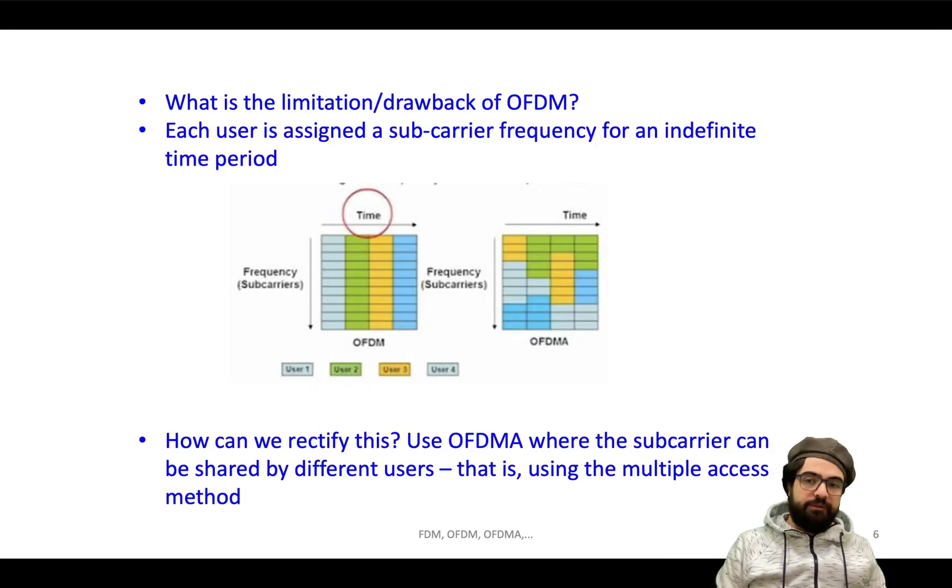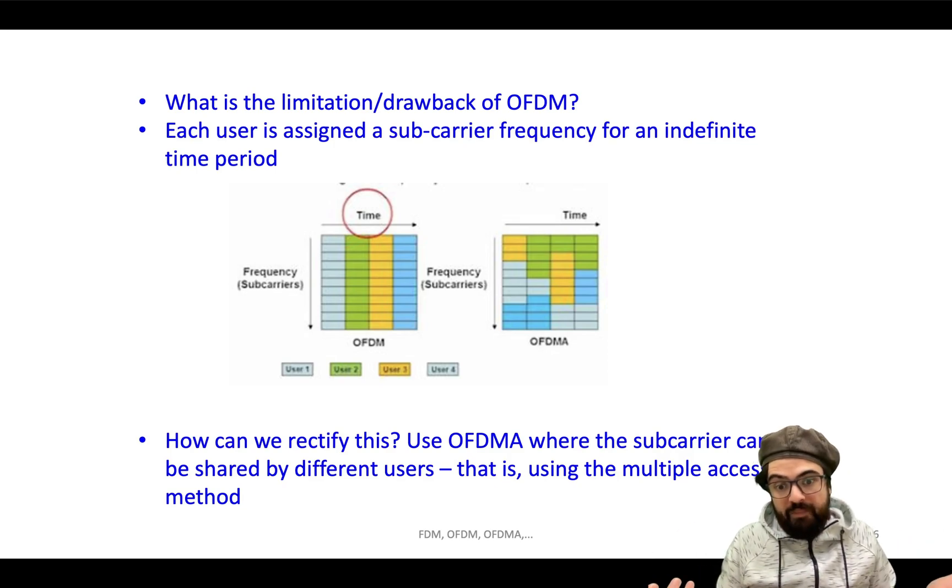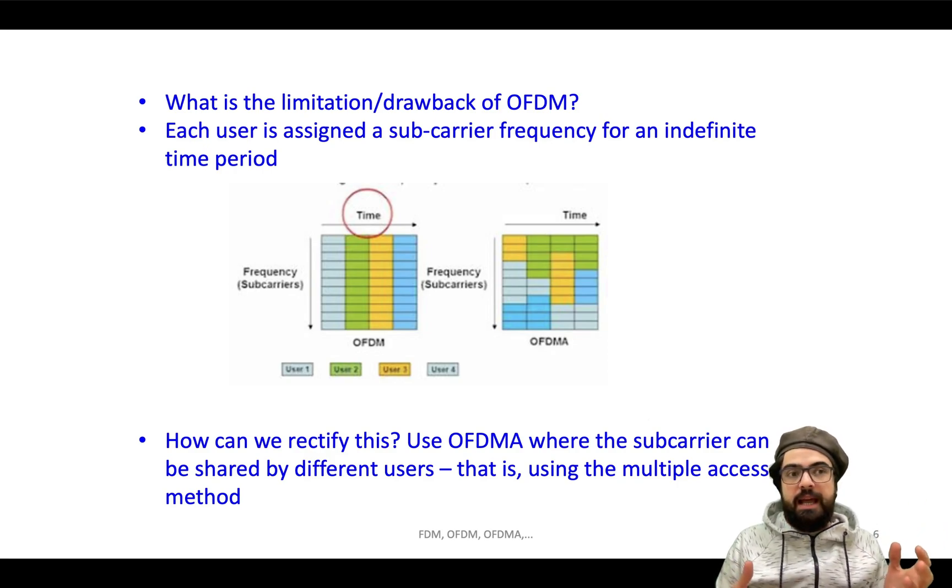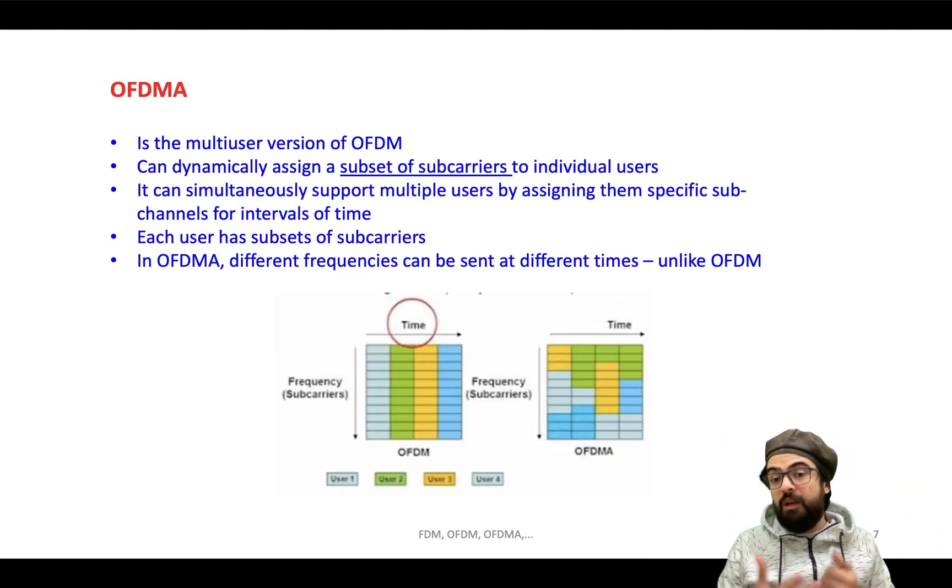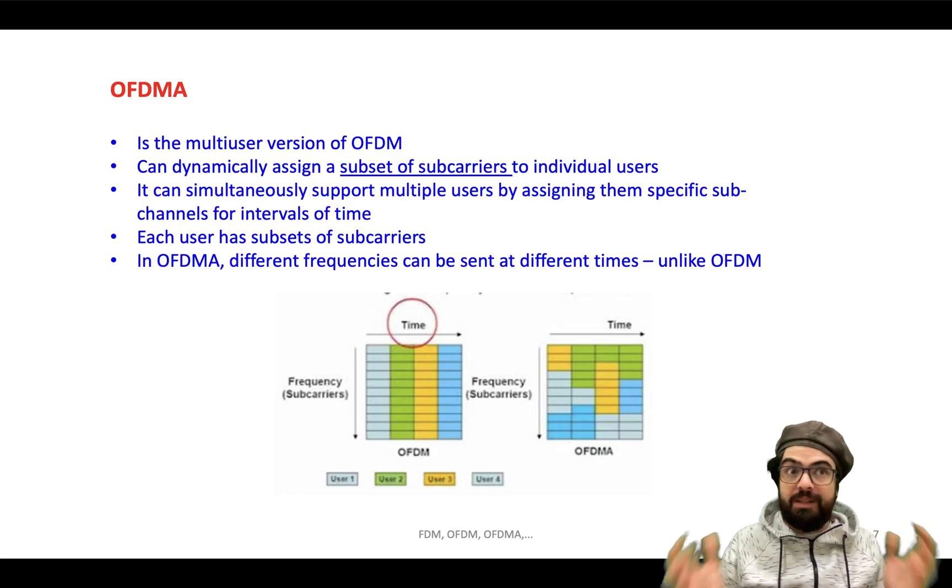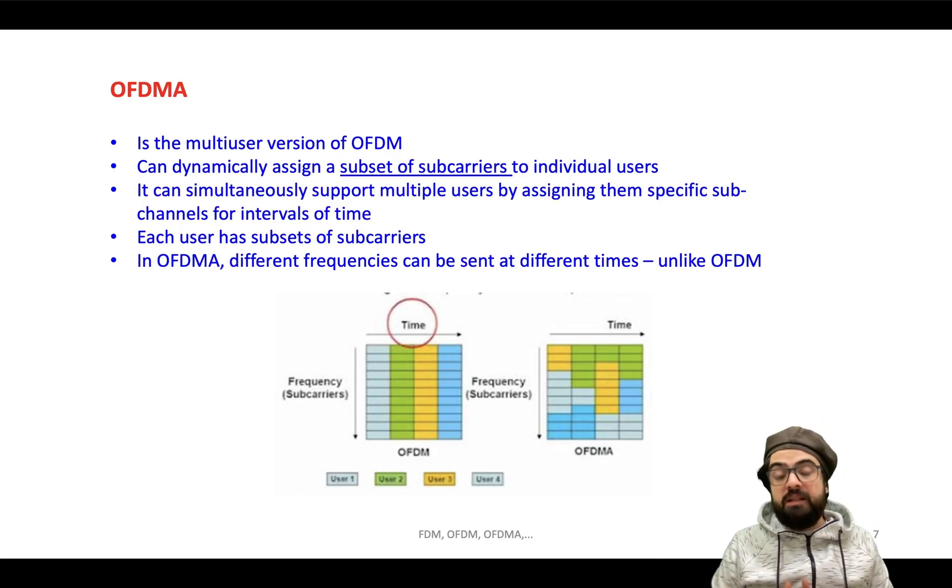But what is the drawback of OFDM? In OFDM, each user, like a subcarrier will be assigned to each user for indefinite time period, which is not good. I mean, we need something to have a set of subcarriers that can dynamically assign to the users. And users can simultaneously use them. This is the thing. And this is the concept of OFDMA - orthogonal frequency division multiple access. This is the concept of that.